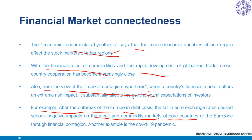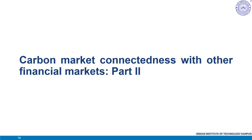Another example is the COVID-19 pandemic. To summarize, in this section we discussed three main reasons or channels of financial market connectedness: the economic fundamentals hypothesis, the financialization of commodities, and the market contagion hypothesis. Next, we will discuss carbon market connectedness with stock markets and cryptocurrency markets.